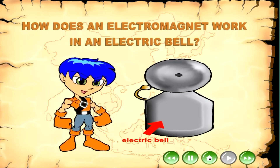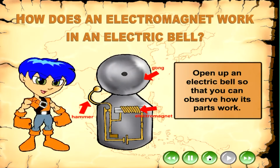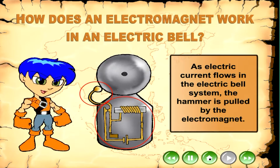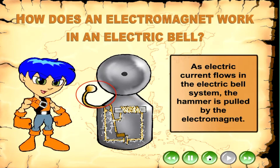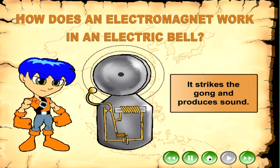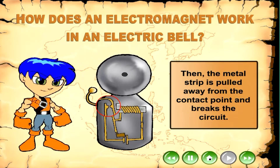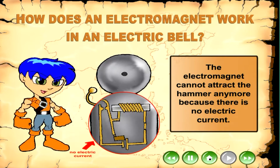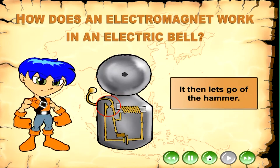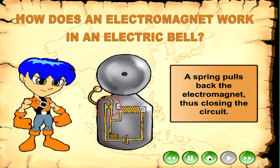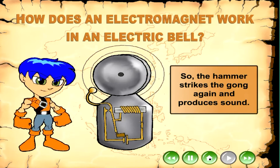How does an electromagnet work in an electric bell? Open up an electric bell so that you can observe how its parts work. As electric current flows in the electric bell system, the hammer is pulled by the electromagnet and strikes the gong, producing sound. Then the metal strip is pulled away from the contact point and breaks the circuit. The electromagnet cannot attract the hammer anymore because there is no electric current, so it lets go of the hammer. A spring pulls the metal strip back to the contact point, closing the circuit, and the hammer strikes the gong again, producing sound.